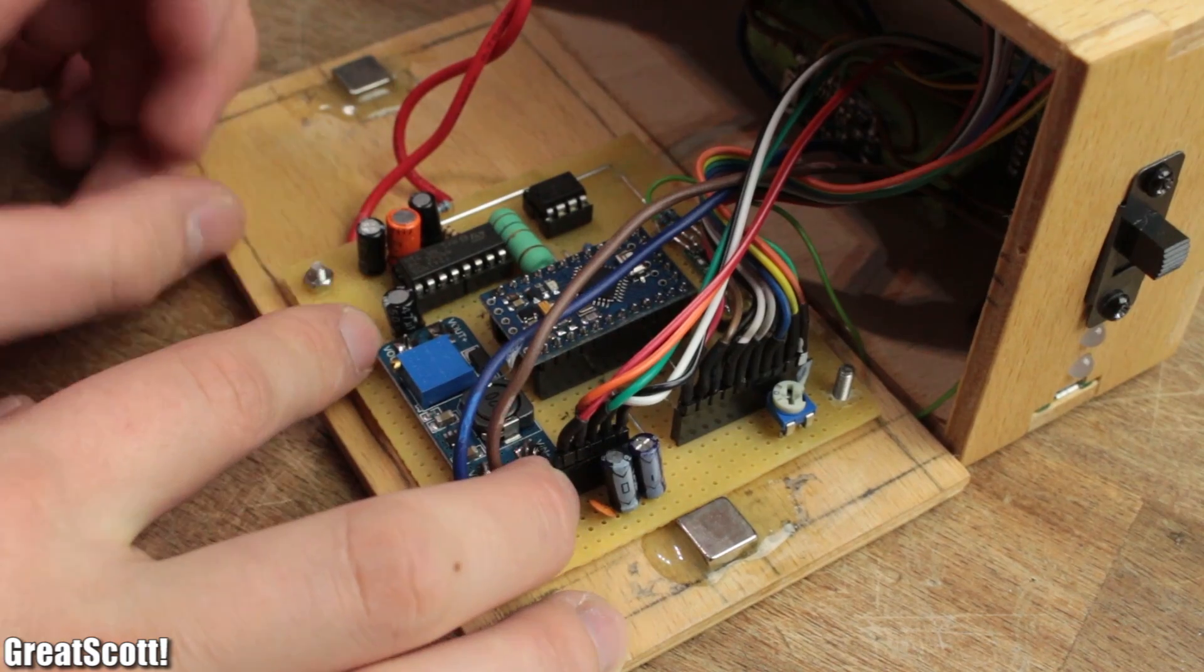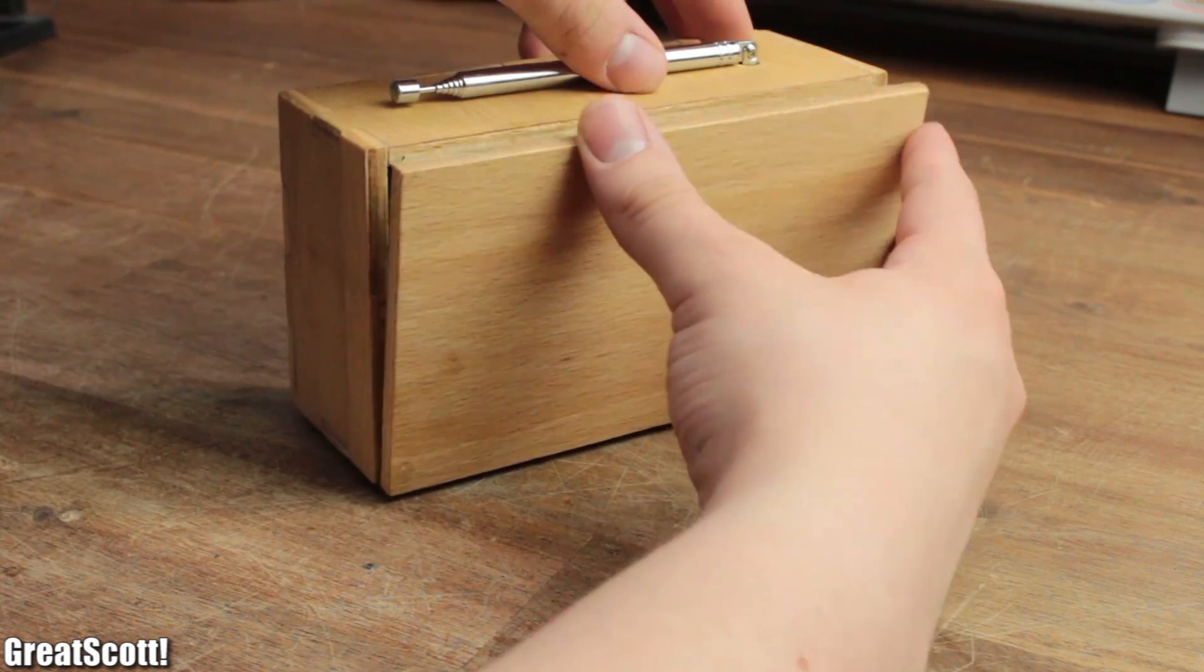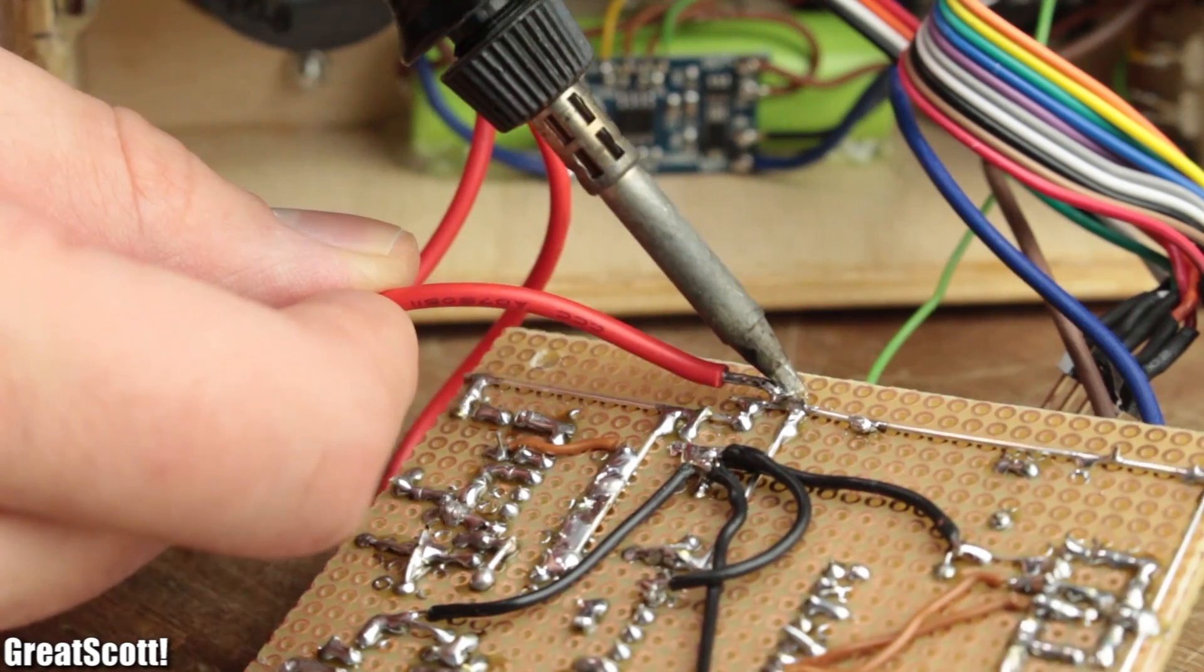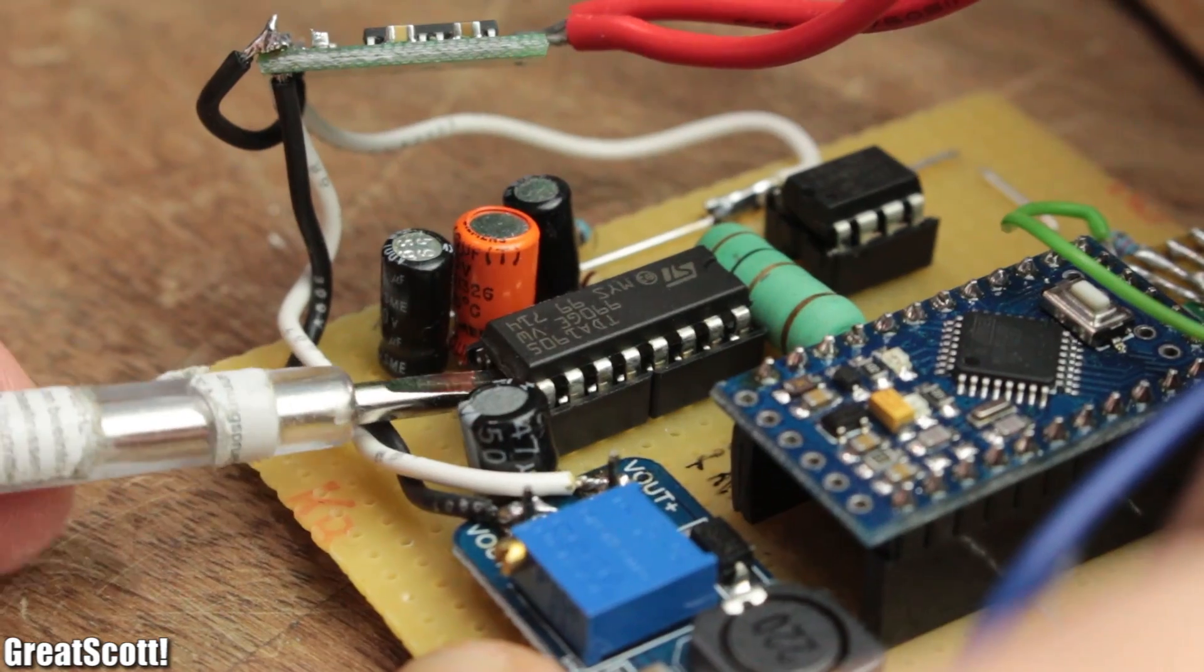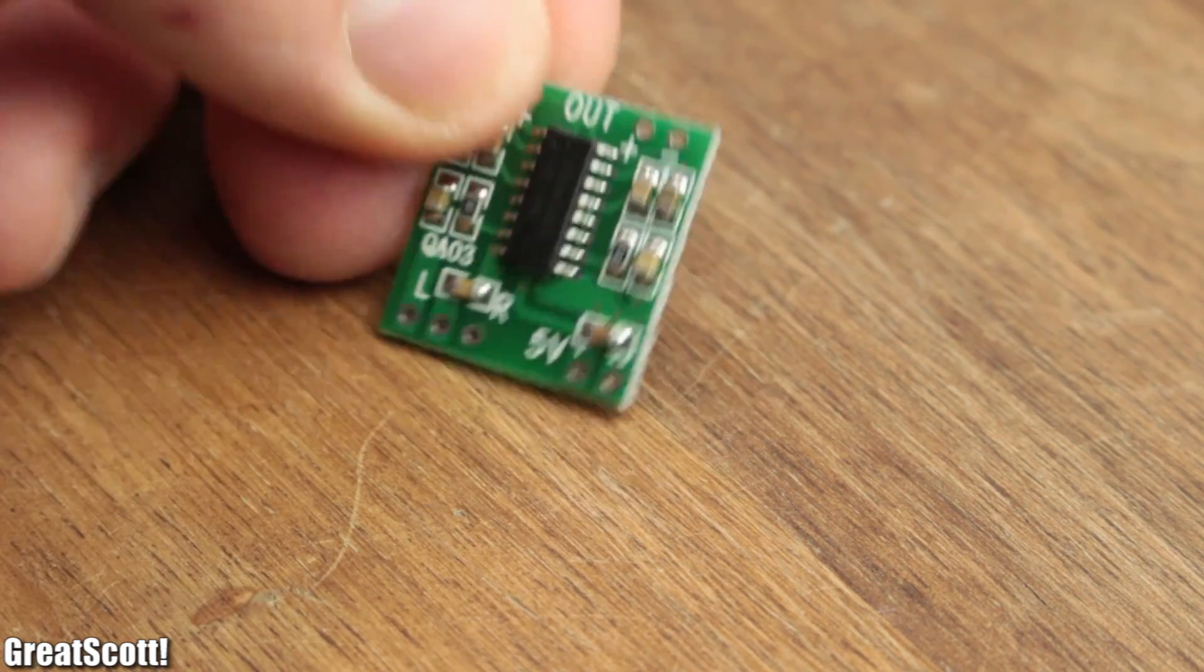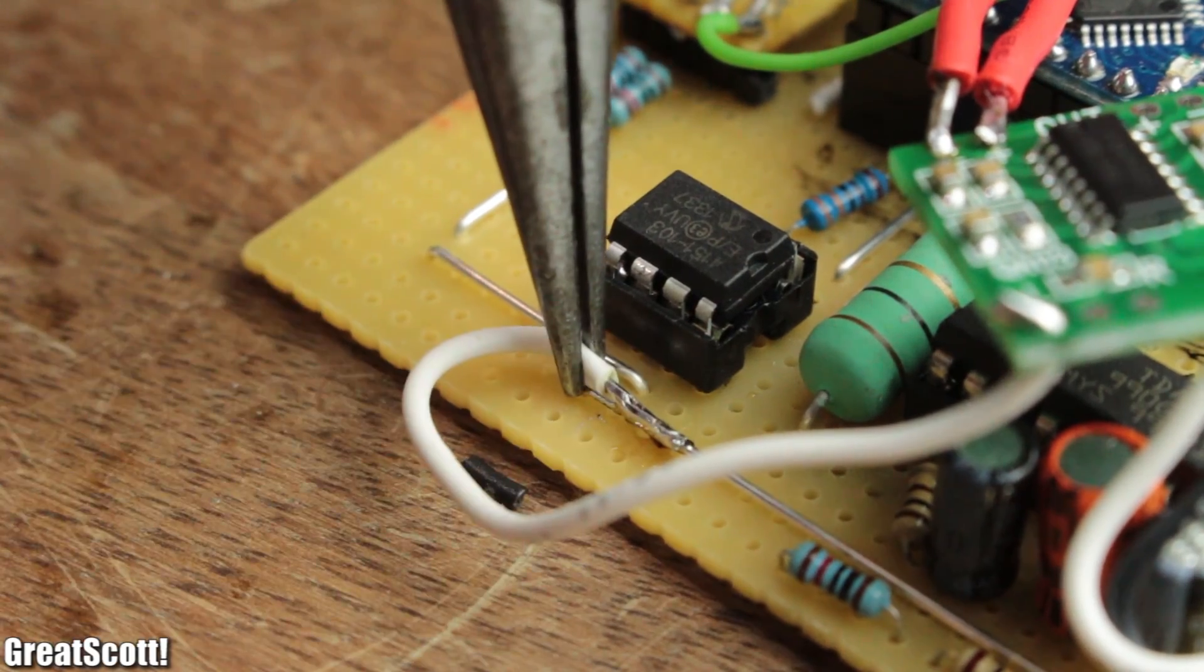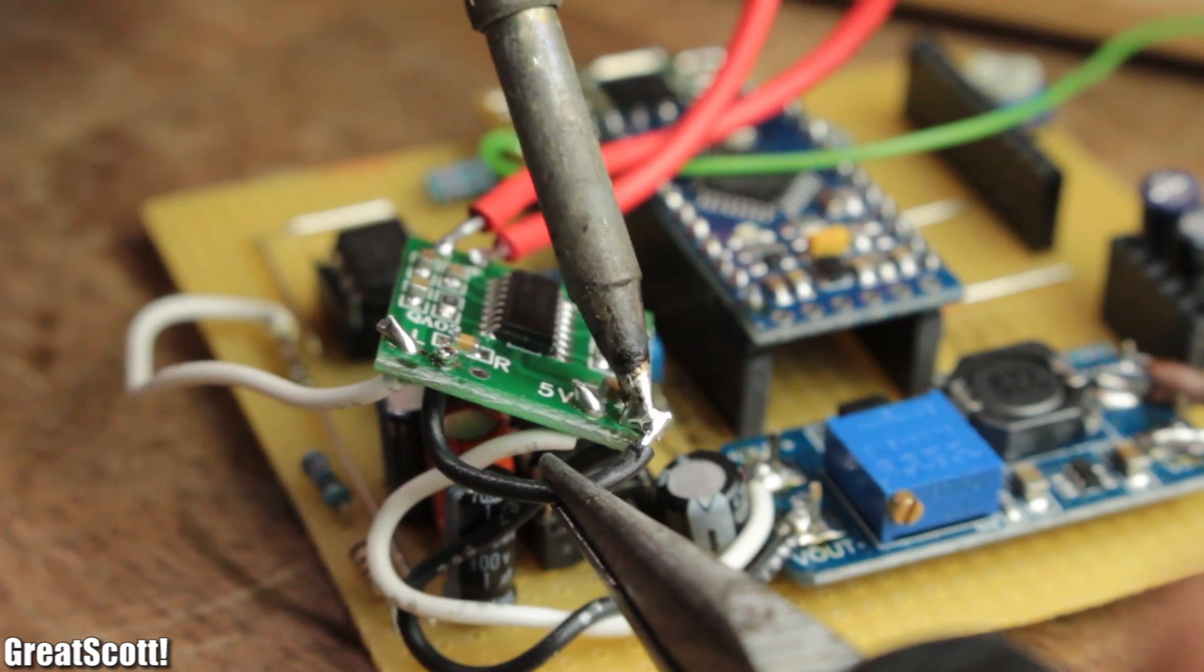And just in case you're curious, switching from the TDA1905 to a pre-made Class-D amp only requires four more wires, additional 10 minutes and delivers decent audio quality as well.